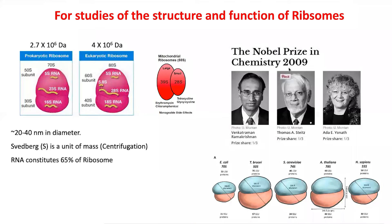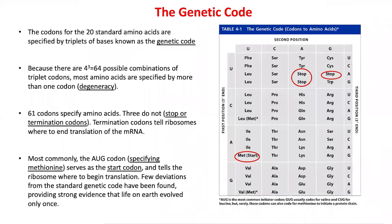The Nobel Prize for ribosome structure and function was given to Venki Ramakrishnan, Tom Steitz, and Ada Yonath. All three were crystallographers and biochemists who purified the 50 to 70 individual ribosomal units, formed the complex, crystallized it, and solved the X-ray diffraction patterns. This was one of the most challenging problems of the last 30 to 40 years.